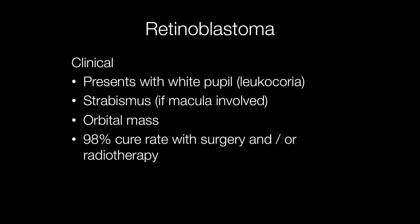Retinoblastomas may present clinically with a white pupil, known as leukocoria, where the reflected light coming off the retina is white rather than black. They may also present with strabismus if the macula is involved, and in advanced cases retinoblastoma may present as an orbital mass.